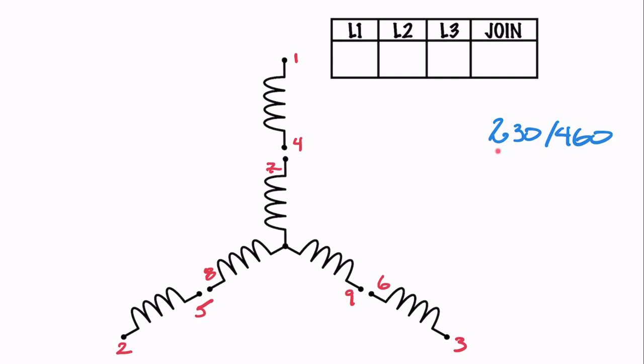Now we need to figure out whether we're connecting to a lower voltage or a higher voltage, which means we're going to be connecting these leads in parallel or in series. We're going to start with the lower voltage first, because I find it's the trickier one to deal with. When we're dealing with voltages in parallel, the key thing to remember is that parallel voltages remain the same. So we have to connect our windings so that each pair is in parallel.